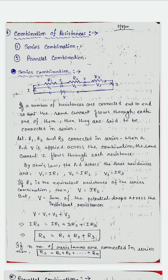In series combination, the law of series combination is that I remains constant. So now if we apply Ohm's law across each resistor — because I is the same but the potential across each resistor is different — across R1 that is V1, across R2 that is V2, across R3 is V3. So applying Ohm's law across these three resistors, we get V1 = I×R1, V2 = I×R2, and V3 = I×R3.